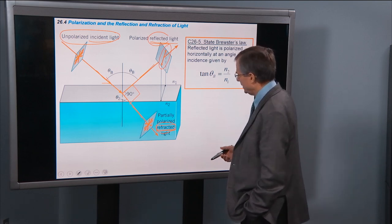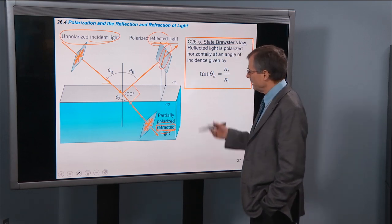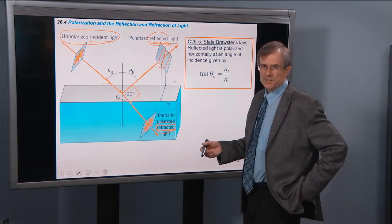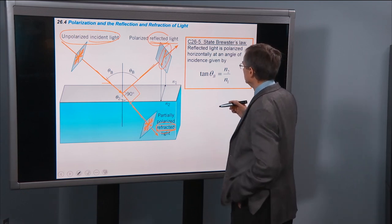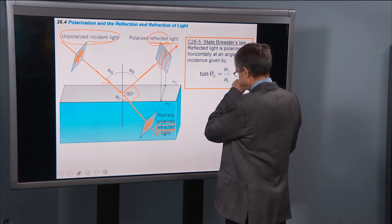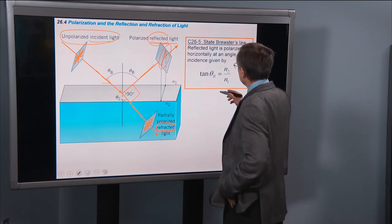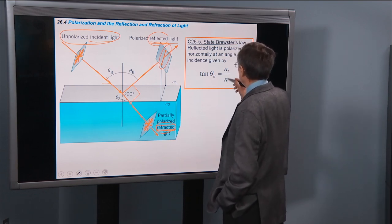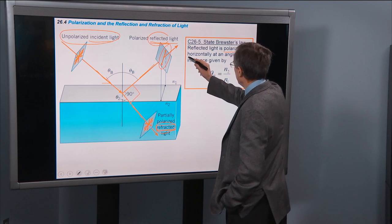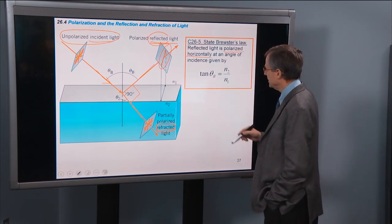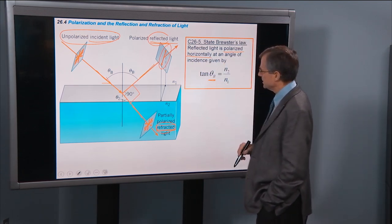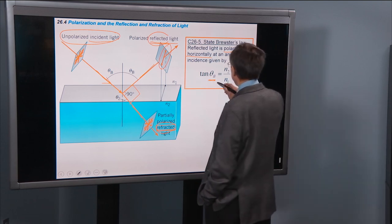If you start off with N1, Snell's Law, you can easily derive, and the derivation is done in the book, I won't do it for you here, that Snell's Law shows that reflected light is polarized horizontally at an angle of incidence given by this so-called Brewster's Angle.